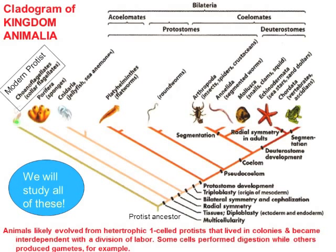We see that in modern protists like the choanoflagellates. Once we get into true multicellular life for animals, that means that if a cell were to come off the multicellular animal, it wouldn't be able to survive very well — it would need the specific conditions created by the other cells. We see that in the phylum Porifera, which are the sponges: if you take some cells from a sponge and remove them, they won't survive well in the ocean.